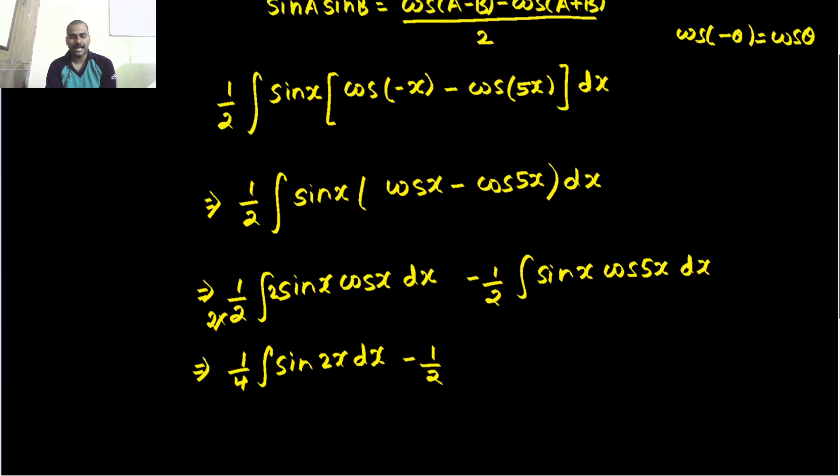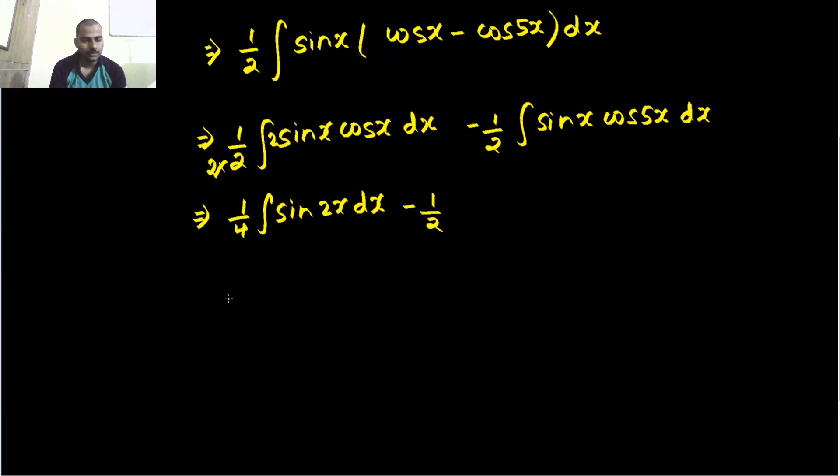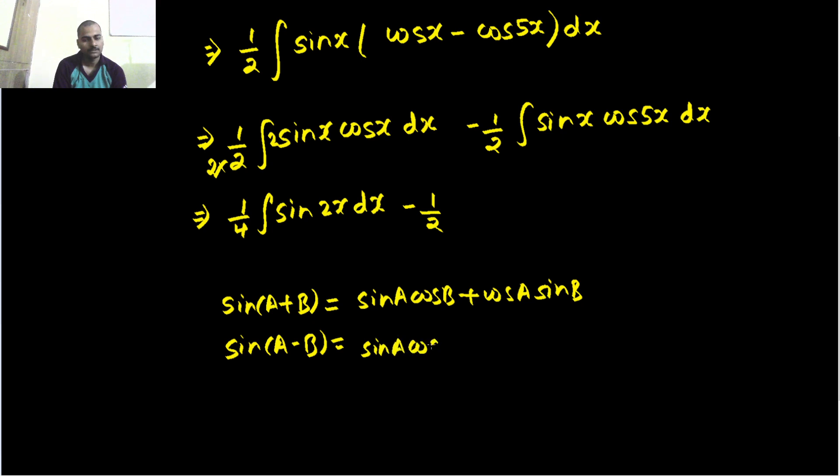If you can't remember, just like me, so sin(A + B) expand it and sin(A - B) expand it too. So you will be getting sin A cos B plus cos A sin B and sin A cos B minus cos A sin B.